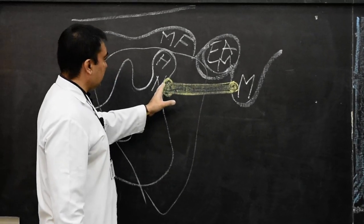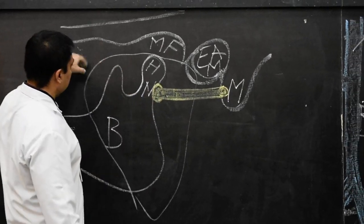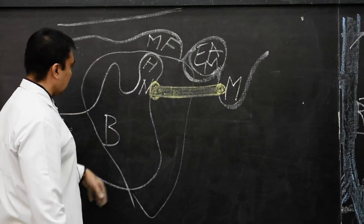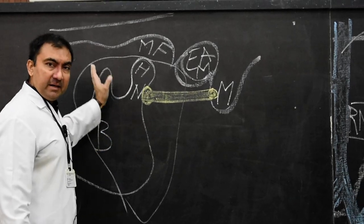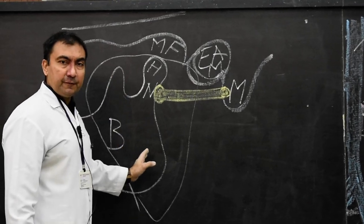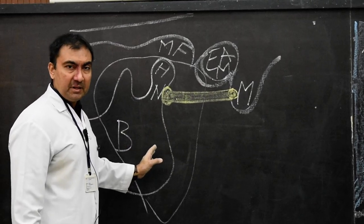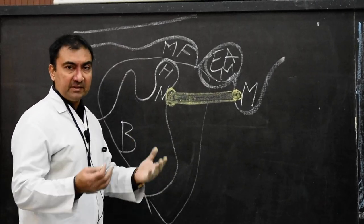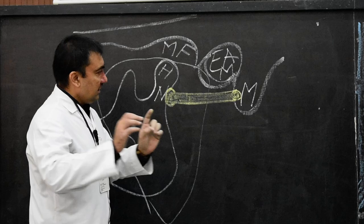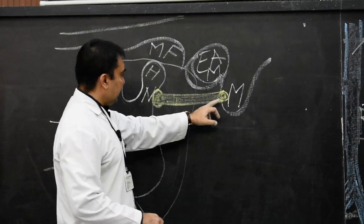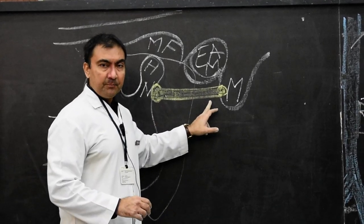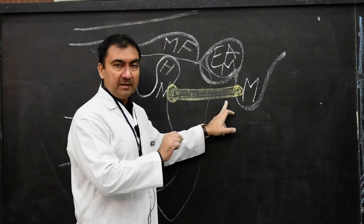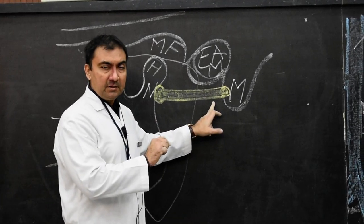From here it will enter the parotid gland, and then it will divide and pass out of the anterior border by dividing into five terminal branches, which we have discussed. This is the surface marking — it is very clear — this is the extracranial part of the facial nerve.